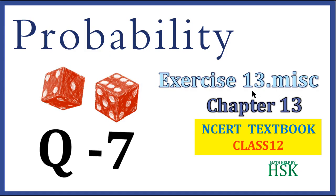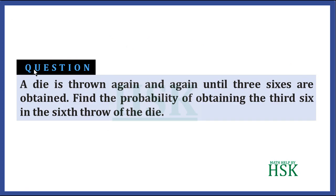This is question number seven of the miscellaneous exercise of chapter 13, Probability. The question is: a die is thrown again and again until three sixes are obtained. We are performing an experiment — throwing a die again and again until three sixes are obtained, at which point the experiment is stopped. This experiment can continue up to an infinite number of throws, since there is no fixed number of throws in which three sixes must be obtained.